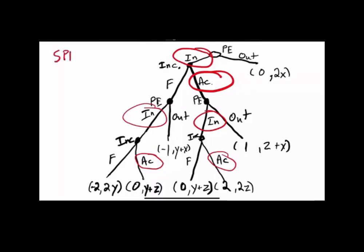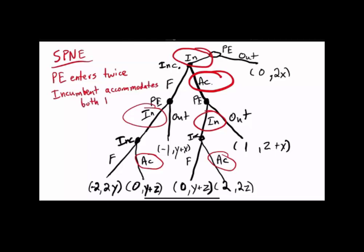The subgame perfect Nash equilibrium: the potential entrant enters twice, and the incumbent accommodates both times. That solves part A of the problem.